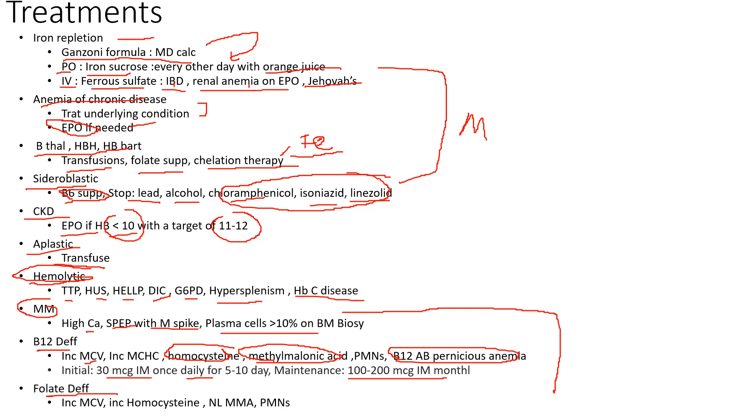Folate you can do PO because this is most of the time the patient has poor nutrition and you're going to see the normal methylmalonic acid in these patients. Usually when you supplement B12 you're always going to supplement folate together. Some people don't even test, they just supplement both and hope for the best.